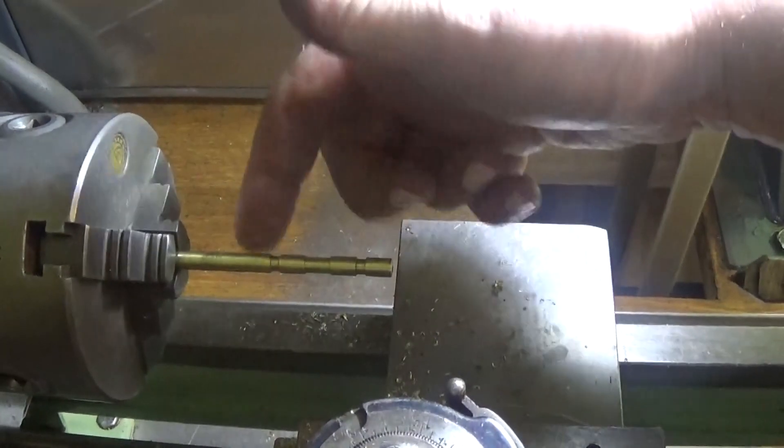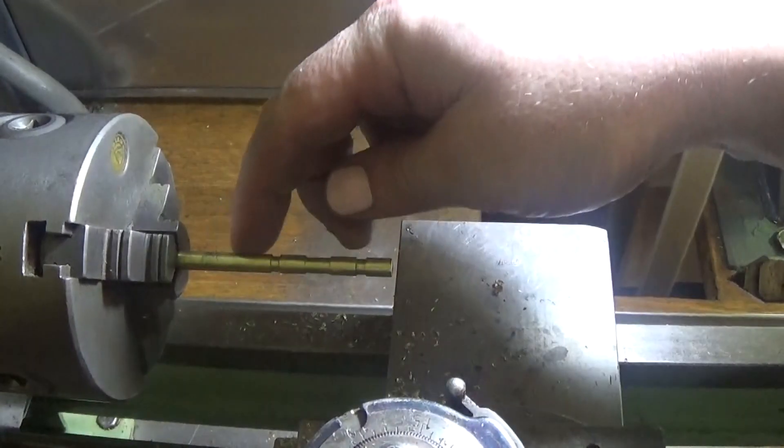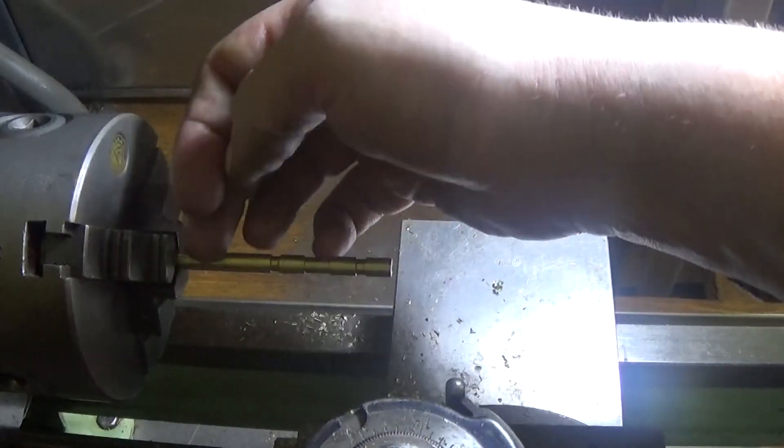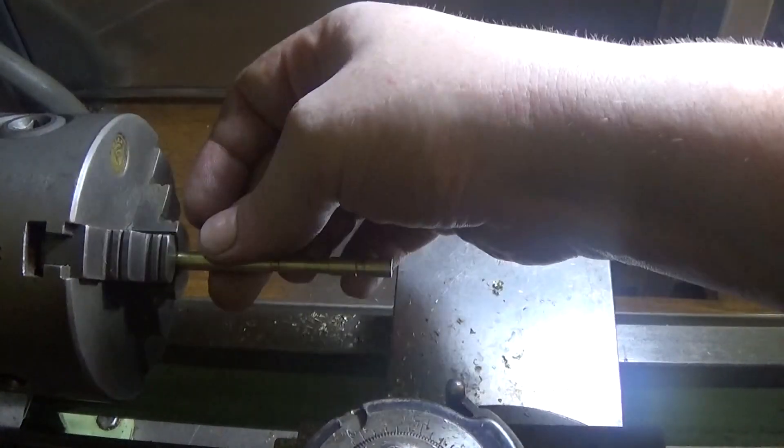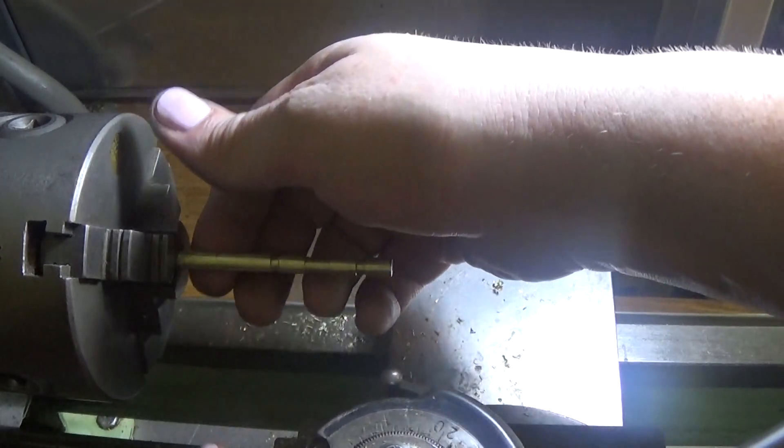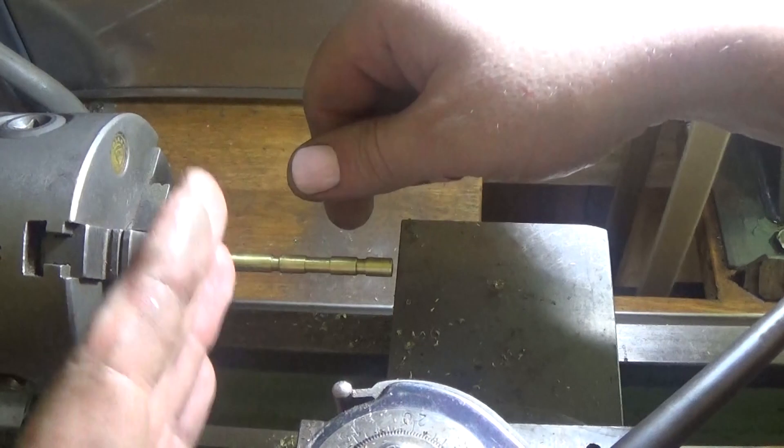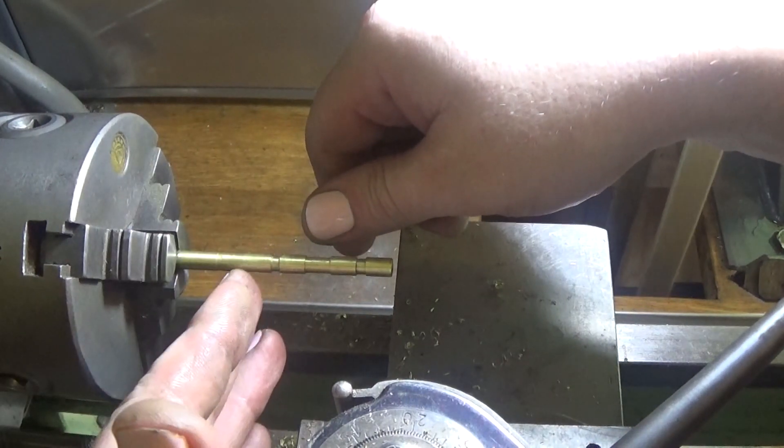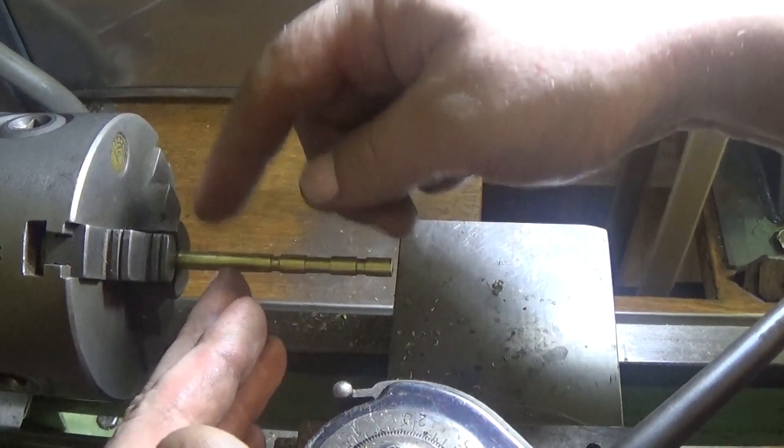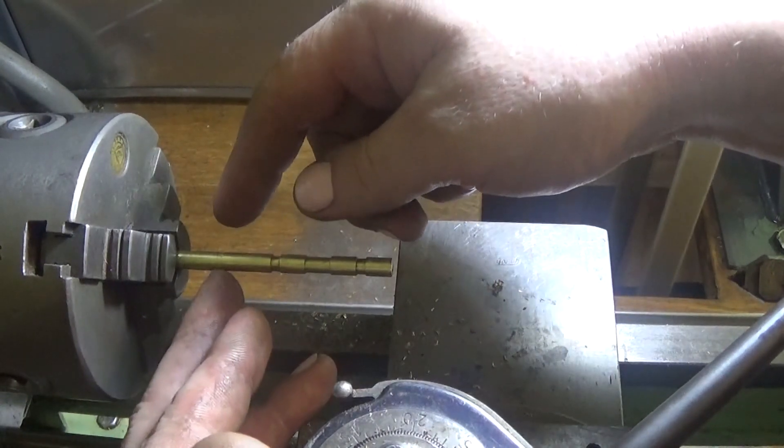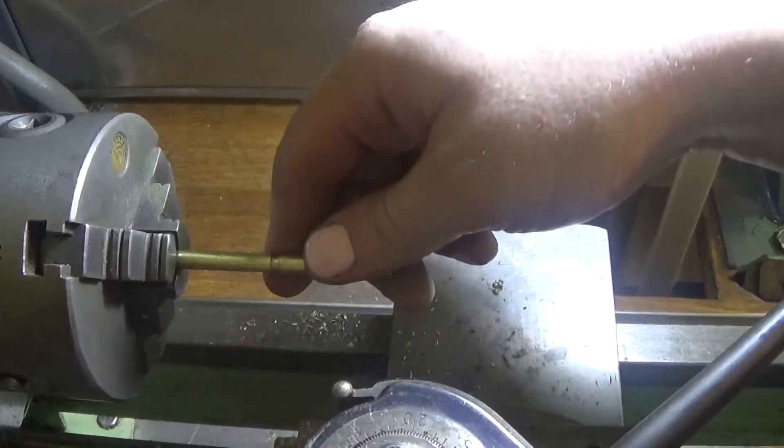The only real job is to chop this off. And I might take it across the bench and cut that. And chuck it the other way around, face the end. And we need to set up with the jig that I've still got in the tool holder from last time and drill this and cross cut it. And we're going to call this piece finished.